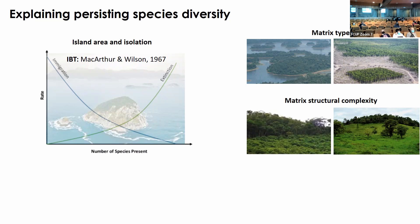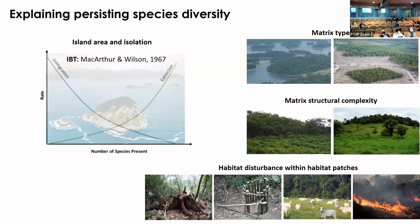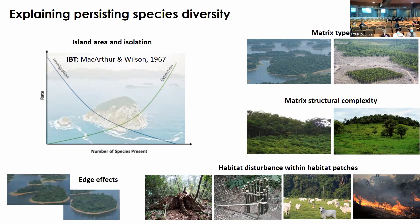Generally, the higher the structural contrast between the patch and the matrix, the worse the quality of the matrix. It's also important to think about the habitat quality of habitat patches, which depends on anthropogenic activities like logging intensity and hunting pressure. Finally, edge effects are also important to consider, and the intensity of those effects will be higher for more irregularly shaped patches.